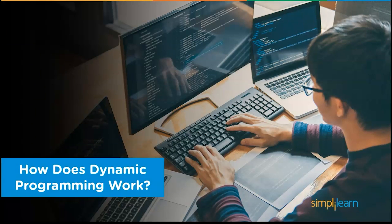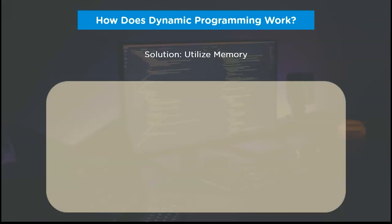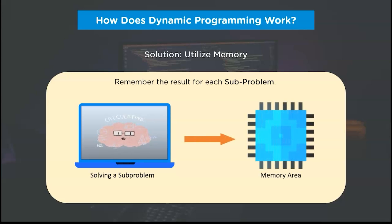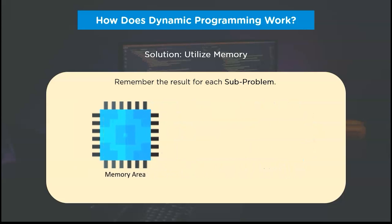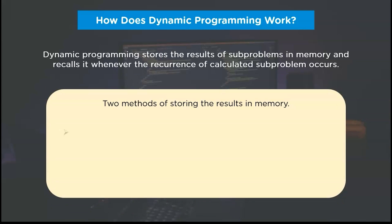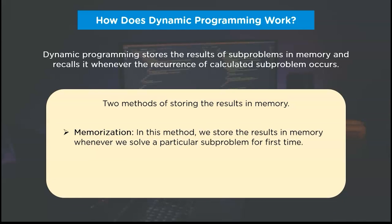Moving ahead, we'll understand how we can reduce this computational complexity using dynamic programming. The computational complexity can be removed by memorizing the results of sub-problems. In terms of computer science, we can refrain from doing unnecessary computations by utilizing memory to store the results of sub-problems. In dynamic programming, we calculate the result for sub-problems and store it in memory. When the same sub-problem is activated in our call stack, we access memory to return the previously calculated result. We can store results in two ways: memoization and tabulation.